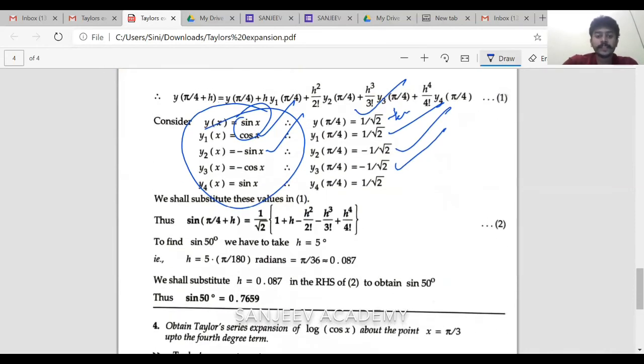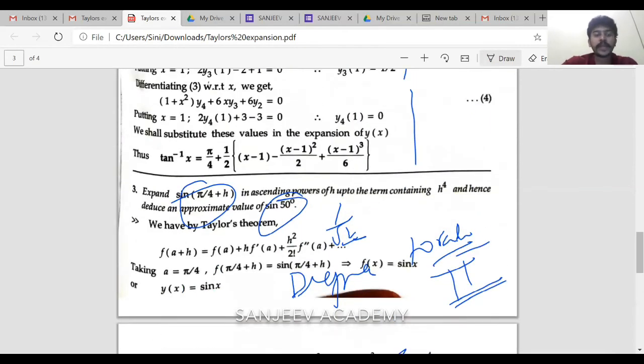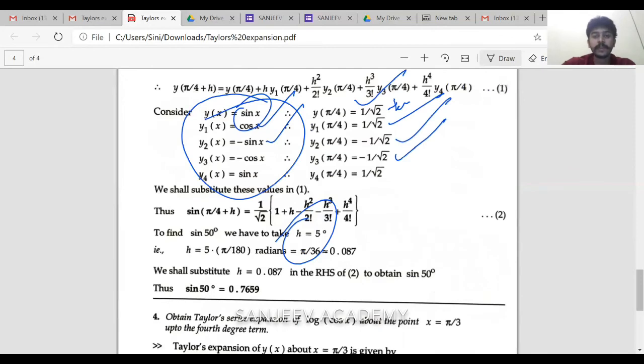Why we are taking h is equal to 5 degree? Just see this thing. Sin pi by 4 plus h. I can take a lot of things, right. But only reason I took h as 5 degree is because the question here is sin 50 degree. And pi by 4 is 45. 45 plus 5 will give me 50 degree. That is the reason they have taken pi. Because if you don't know mathematics properly, then you will never be able to figure out this particular question.